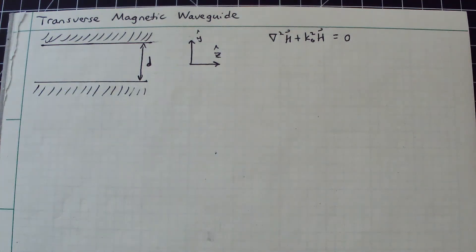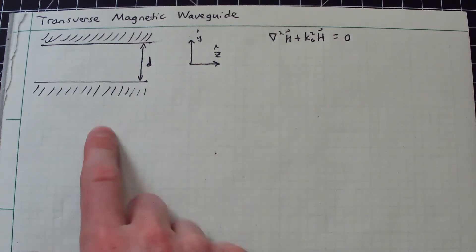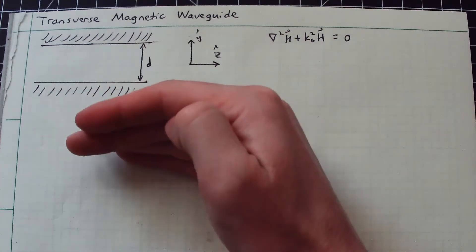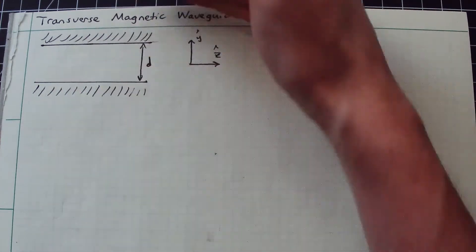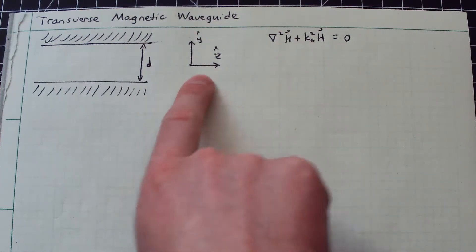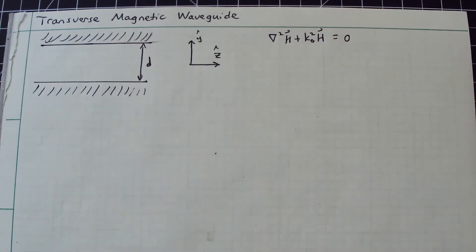Let's talk about transverse magnetic polarization in the parallel plate waveguide. I've drawn here the typical dimensions: a perfect electrical conductor on the bottom and the top separated by a distance d. My longitudinal direction down the waveguide is z, and my transverse direction is y.